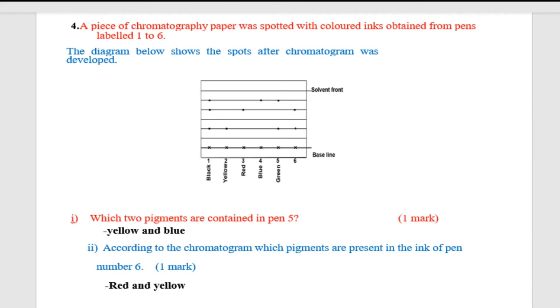So you are told which two pigments are contained in pen five. Pen five you can see here. And those are yellow, you can see yellow and blue. They are appearing in that line.